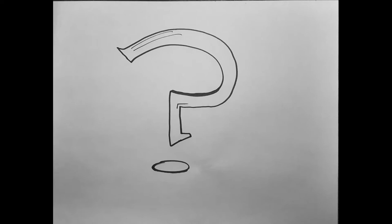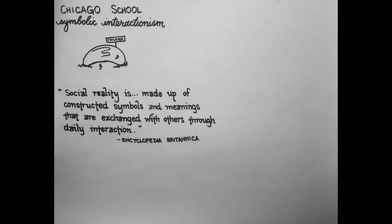To study friendship a bit, I turned to work in symbolic interactionism, also known as the Chicago school. For this sociological approach beginning in the early 20th century, quote: "Social reality is made up of constructed symbols and meanings that are exchanged with others through daily interaction," and also quote: "The constructed self, however changing, functions as a guide to social behavior."